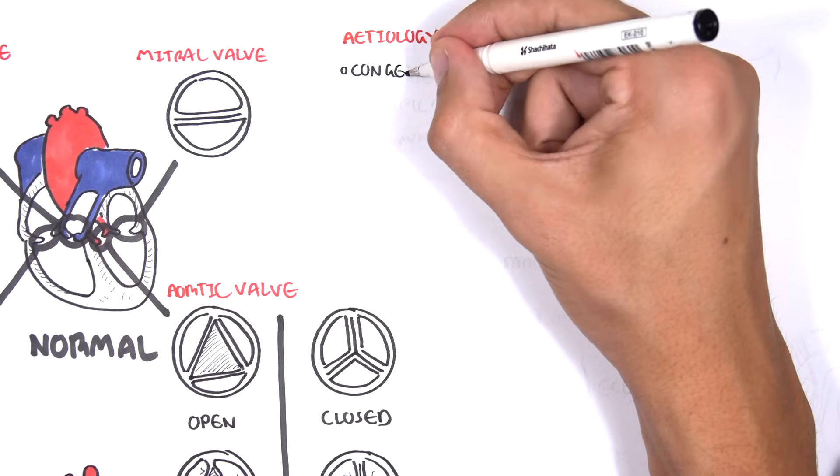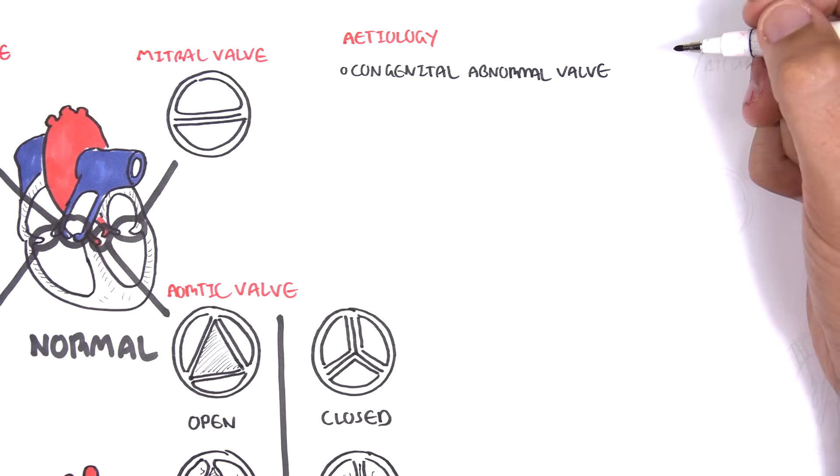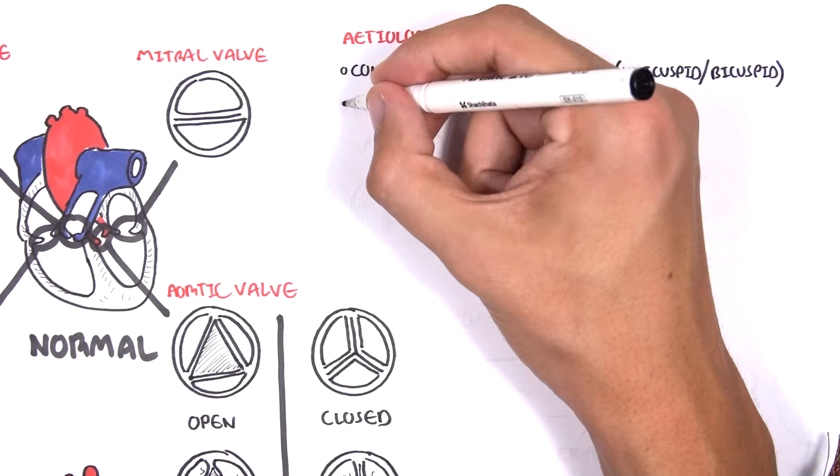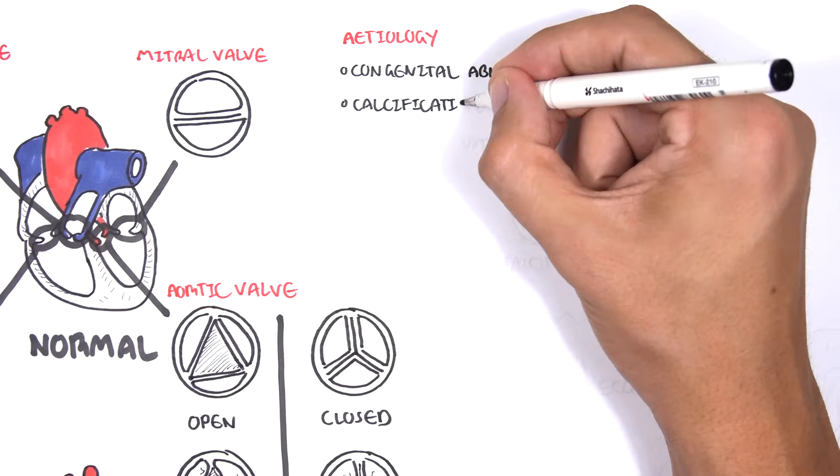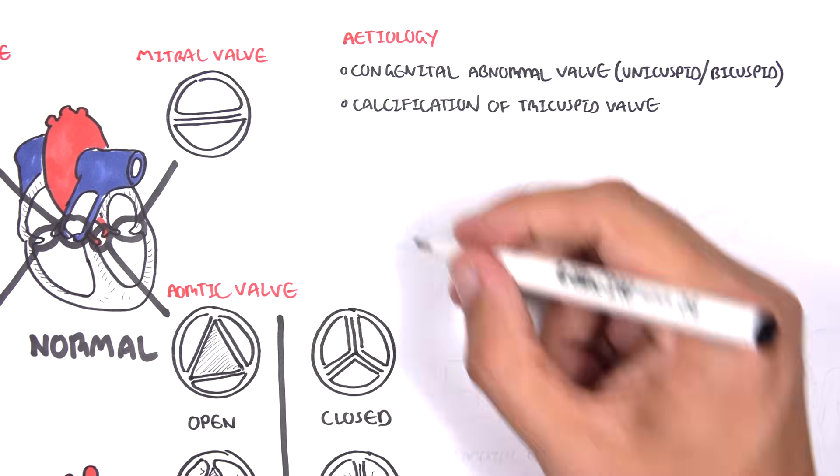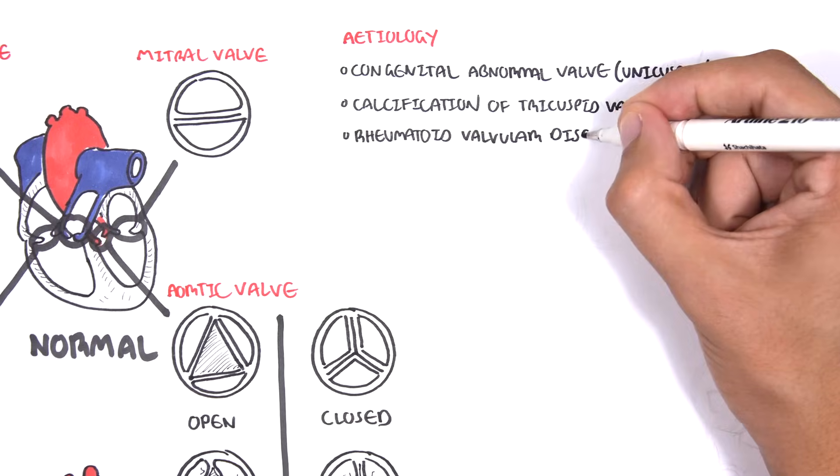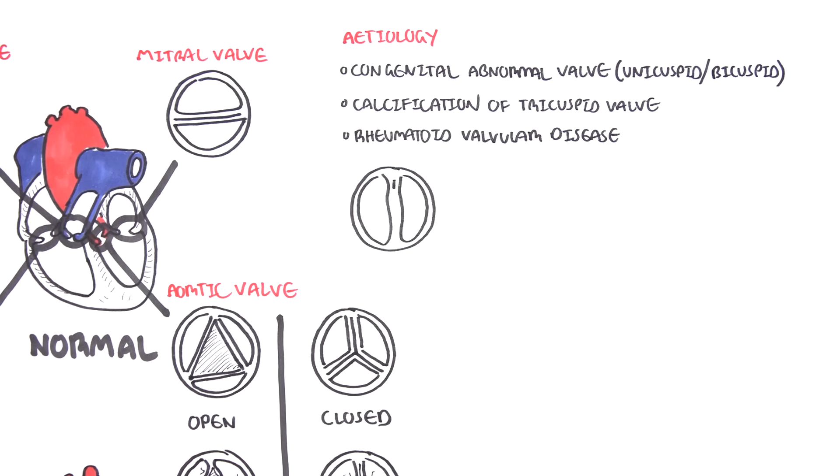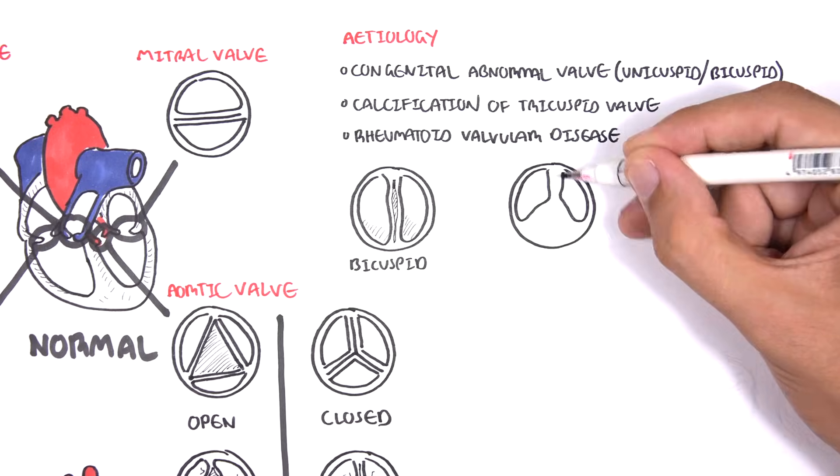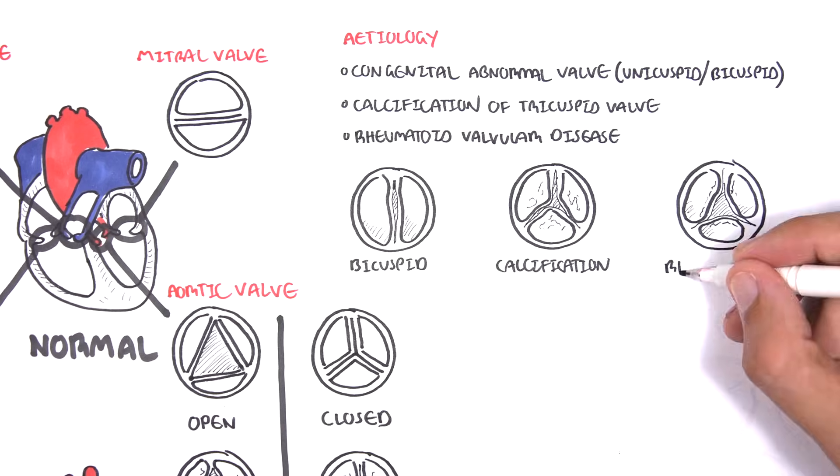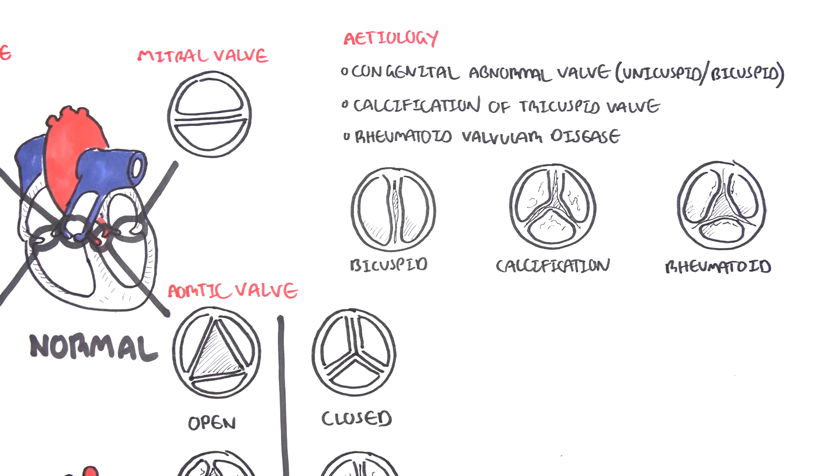There are three major etiologies of aortic stenosis. One is congenital abnormal valve, a unicuspid or bicuspid aortic valve. Two, calcification of the aortic valve usually with age. And three, a rheumatic valvular heart disease. Here is an abnormal aortic valve which is bicuspid. Here is a calcified aortic valve resulting in stiffening. A rheumatic valve forms scar tissue leading to stenosis.